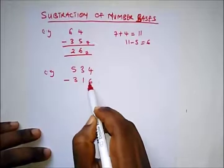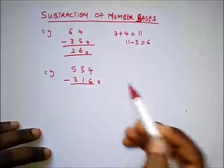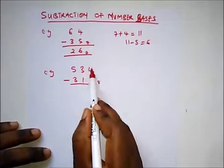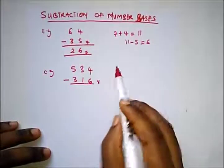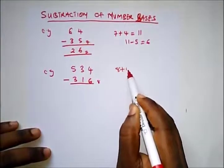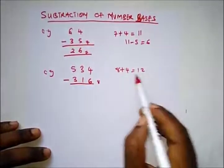Minus 316 in base 8. Here we have to borrow 1, and the one we borrow here is worth 8. So we have 8 plus 4, which gives us 12. So it will be 12 minus 6, which will be 6.